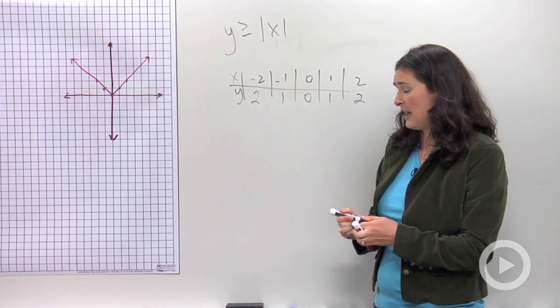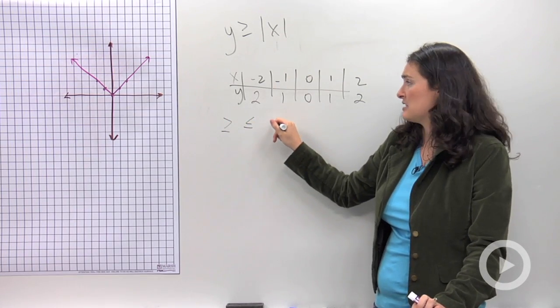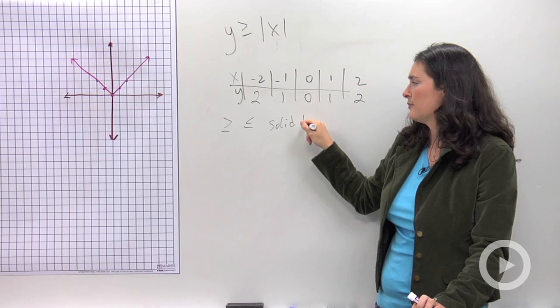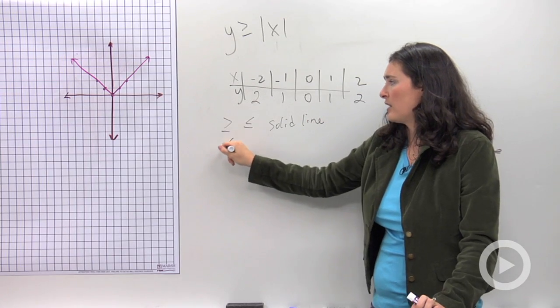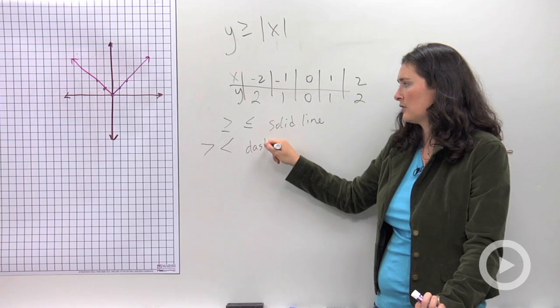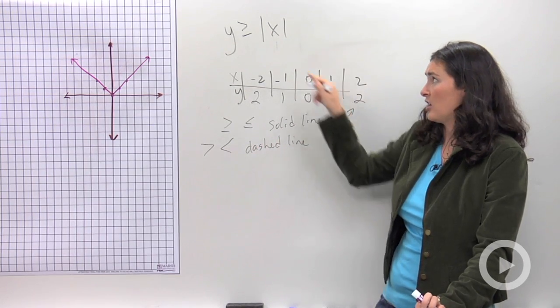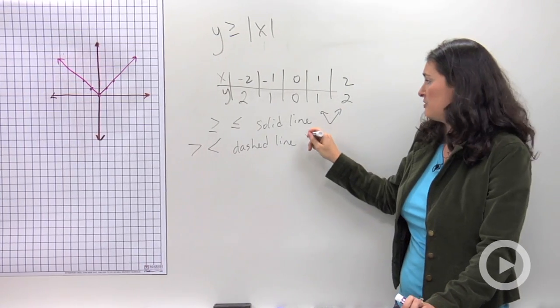Now there's a couple other things to keep in mind. You know about inequalities. If it's one of these two signs, it's going to be a solid line. But when it's one of these two signs, it's going to be a dashed line. So I might have a solid v like in our case, or sometimes you're going to have a dashed v.